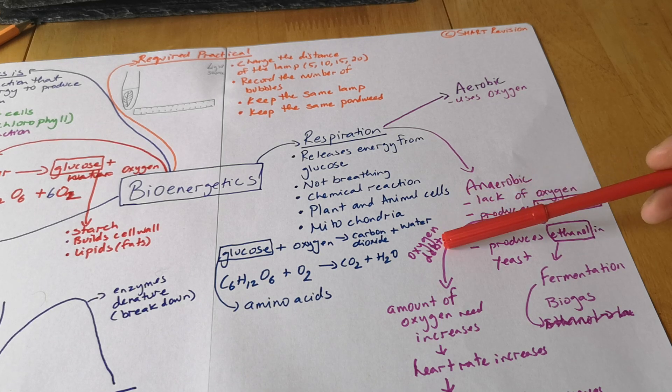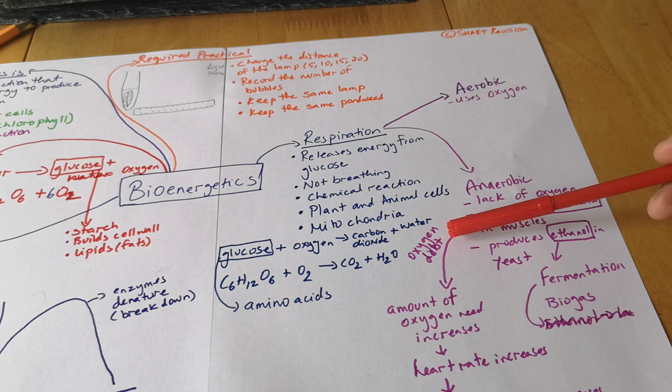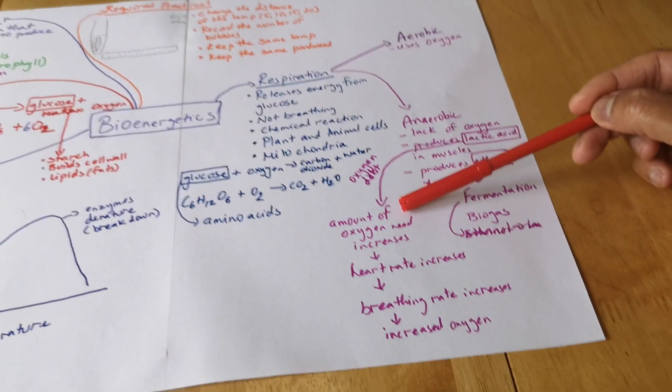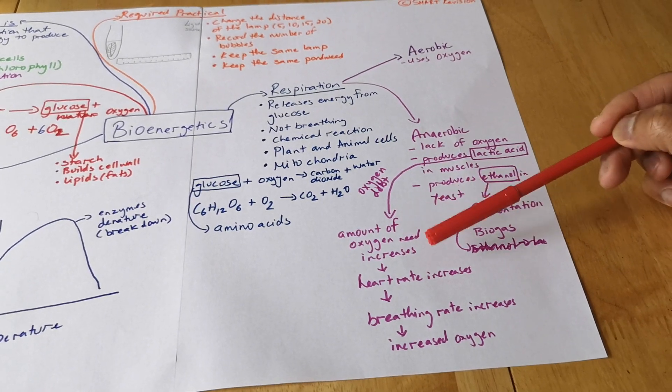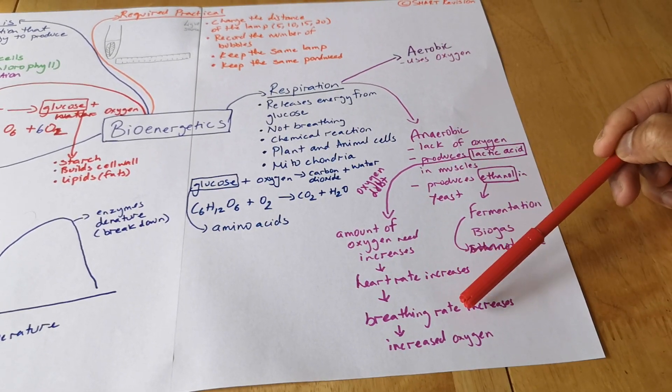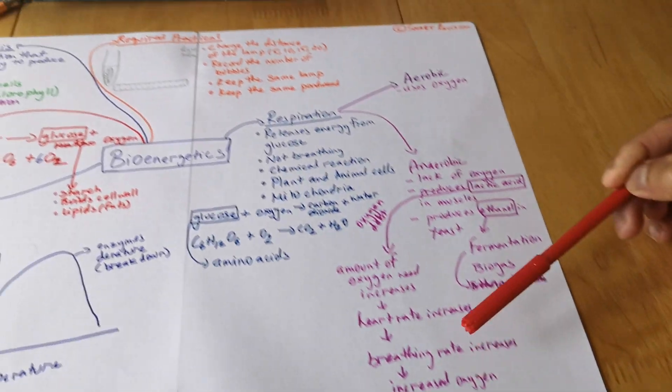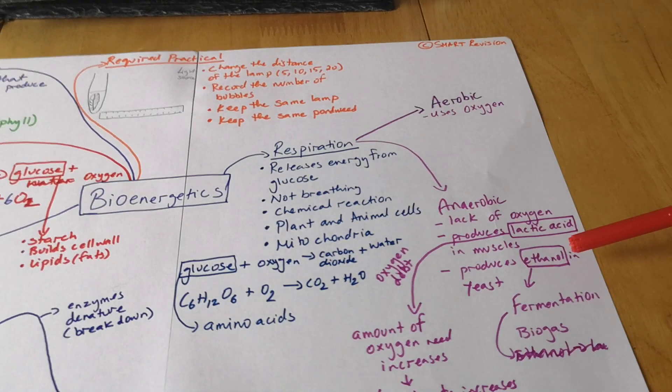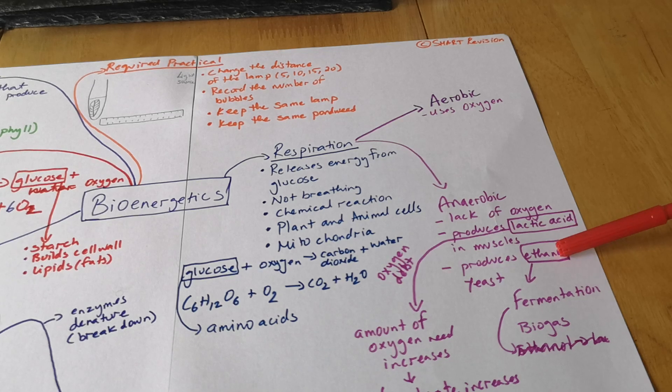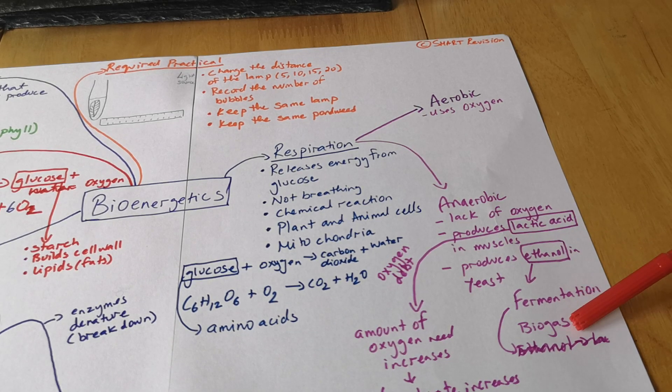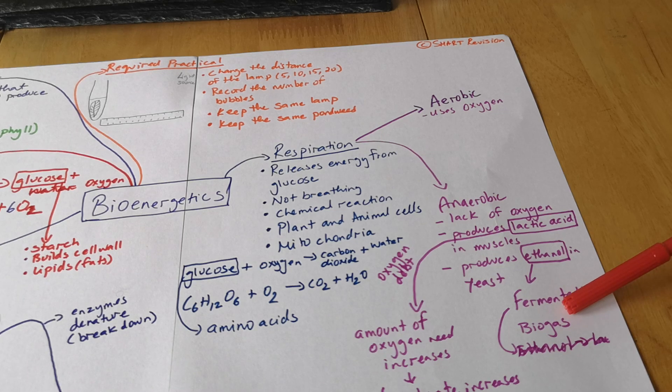In that case you've got two things that's going to happen, or three. All the amount of oxygen needs to increase, your heart rate increases, breathing rate increases because you need that increased oxygen level. In plant cells or in bacteria it produces ethanol, so that's where fermentation and biogas are two other applications.